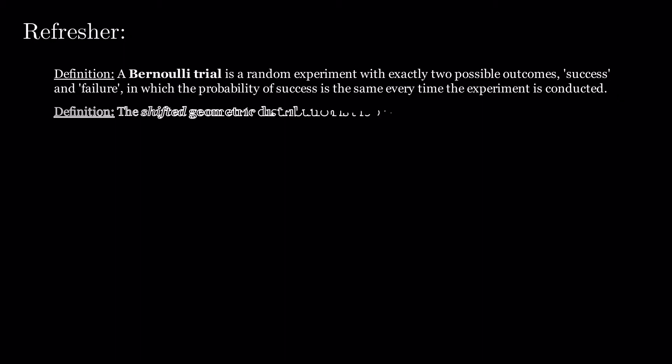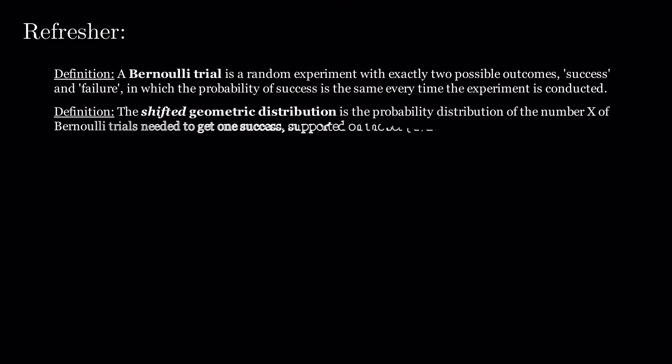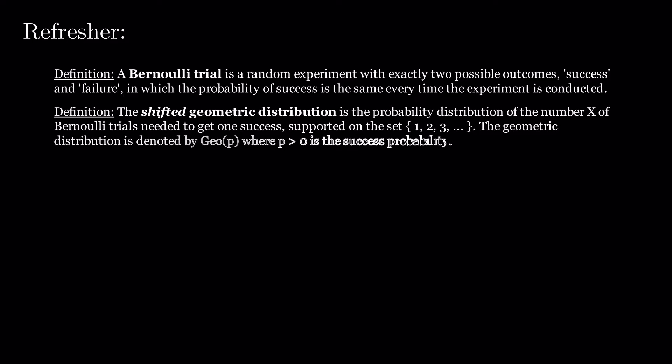The shifted geometric distribution is the probability distribution of the number X of Bernoulli trials needed to get one success, supported on the set 1, 2, 3, etc. The geometric distribution is denoted by Geo of P, where P greater than 0 is the success probability.